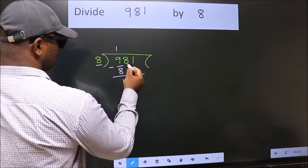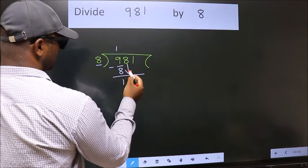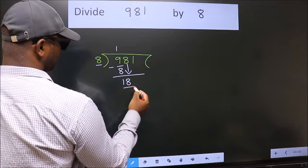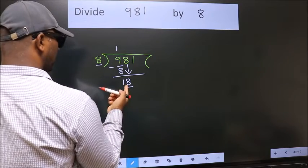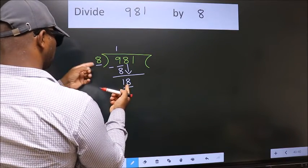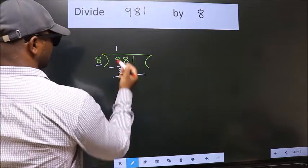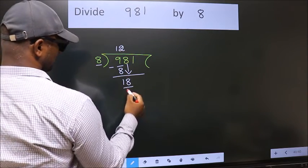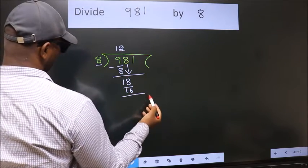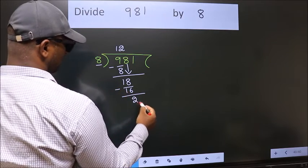After this bring down the beside number. So 8 down. So 18. A number close to 18 in the 8 table is 8 twos, 16. Now we subtract. We get 2.